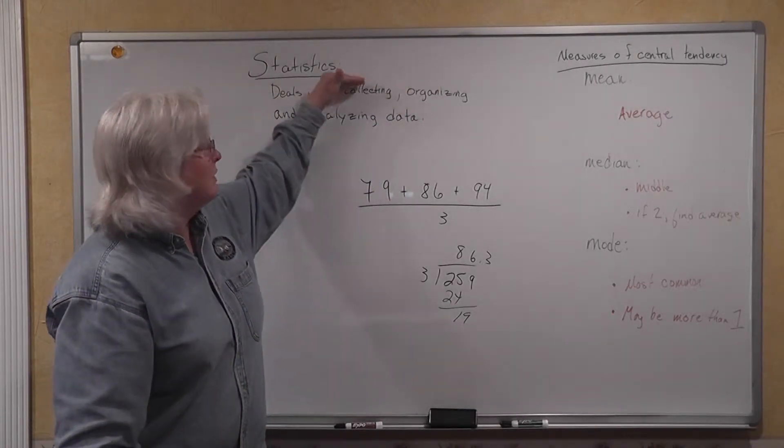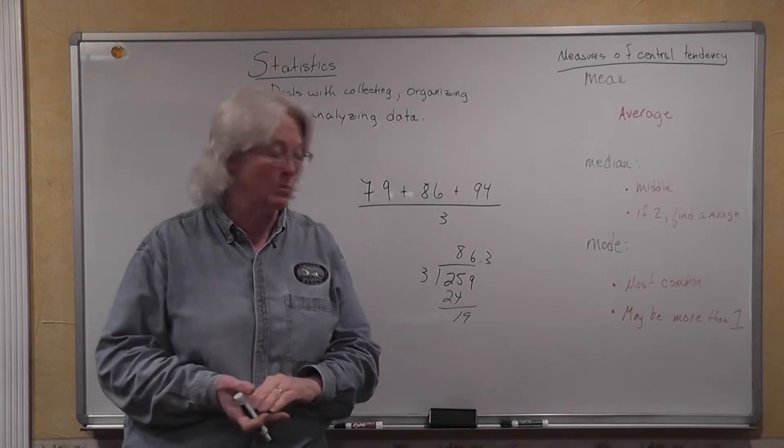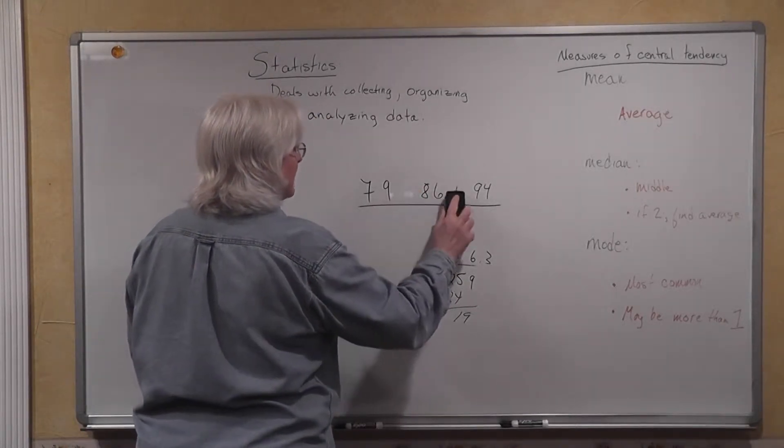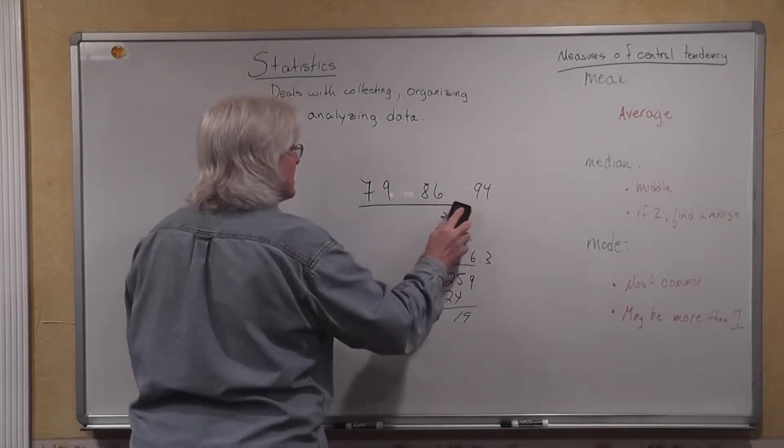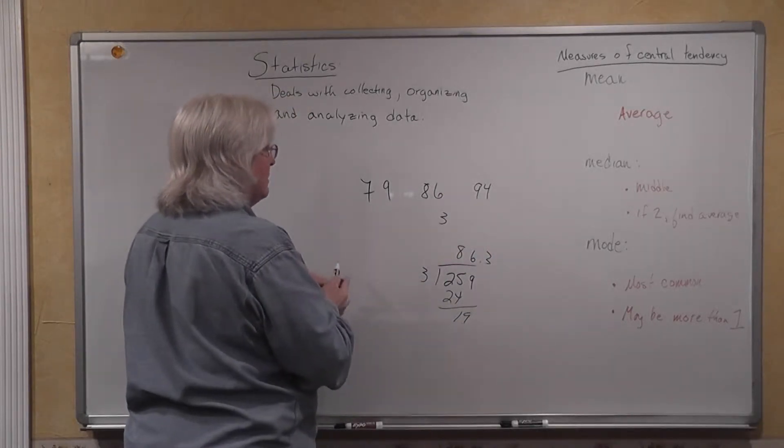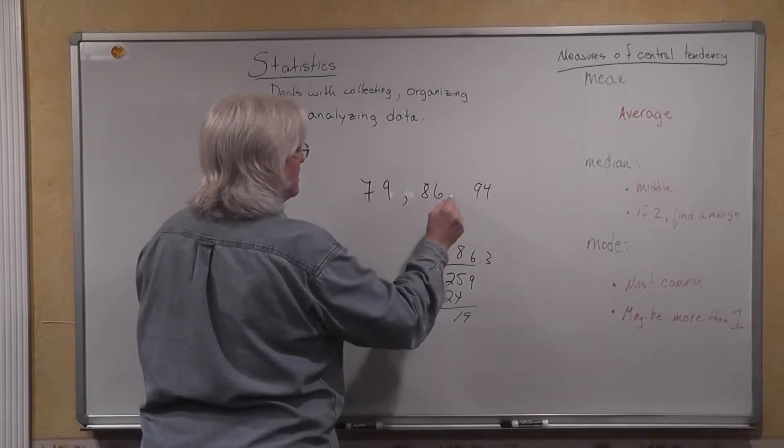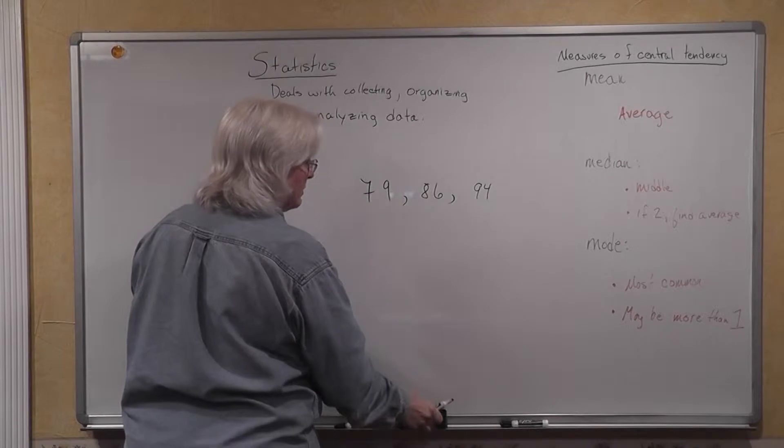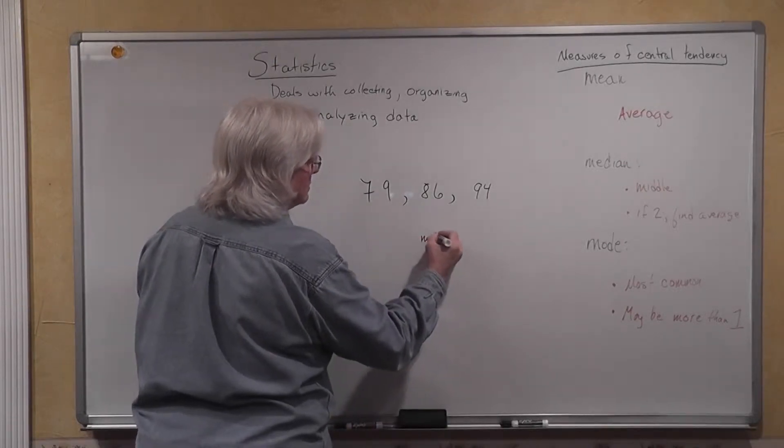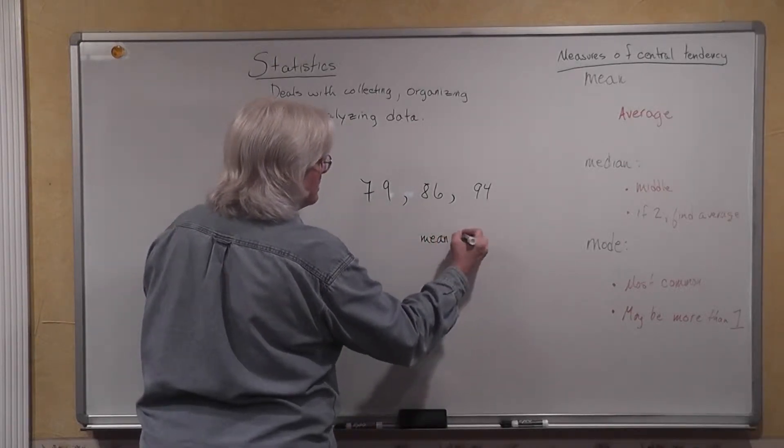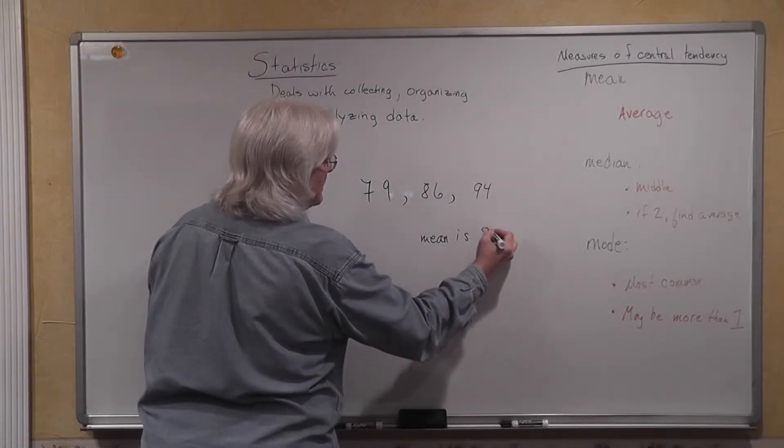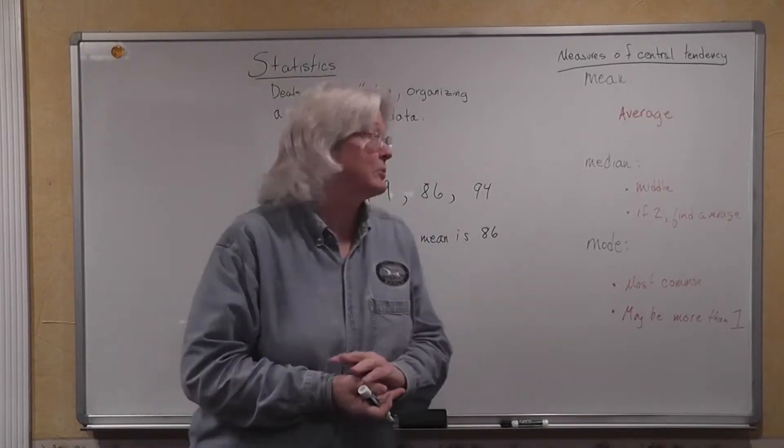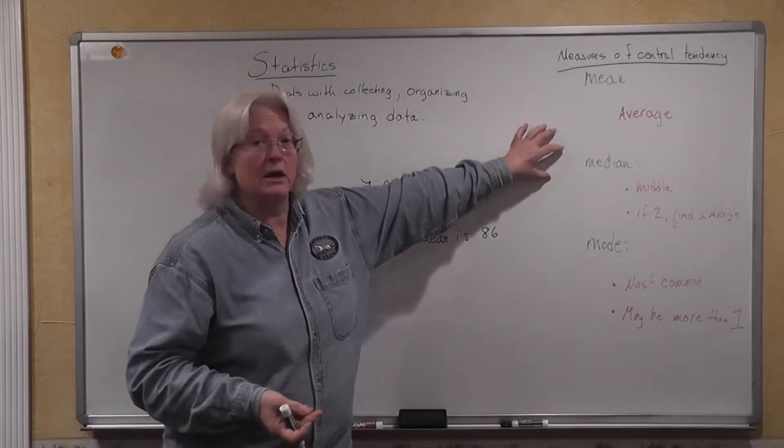Or in the vocabulary of statistics, what you would say is if you are given three numbers, 79, 86, and 94, and you are asked to calculate their mean, the mean of those three numbers would be 86.3%. If we rounded it to the nearest whole number, the mean would be 86.3%. So see right there, you already know how to do one third of your chapter. Mean is nothing but average.